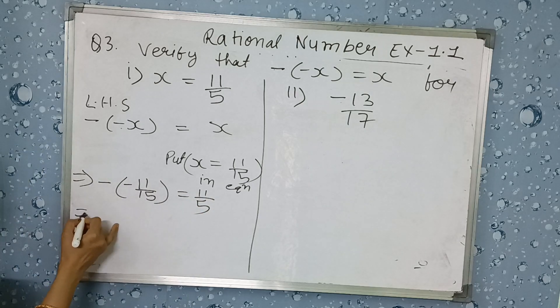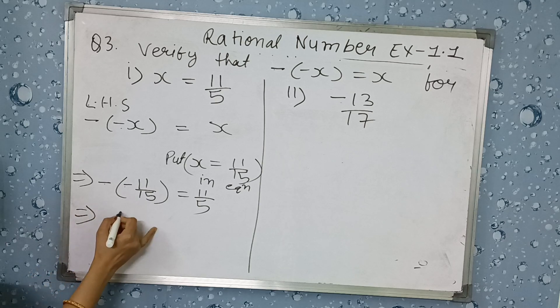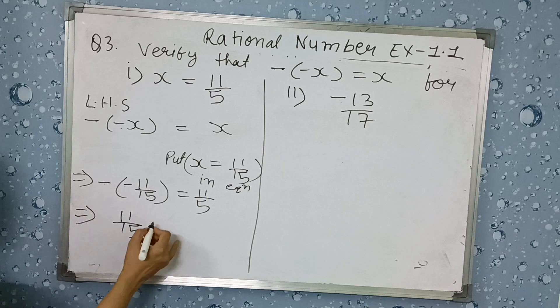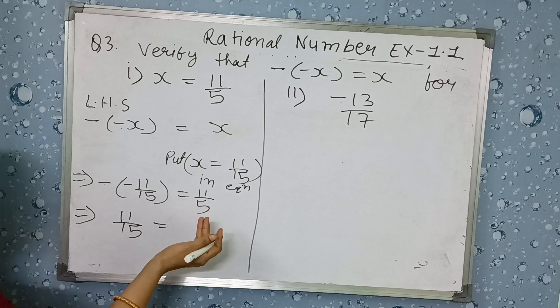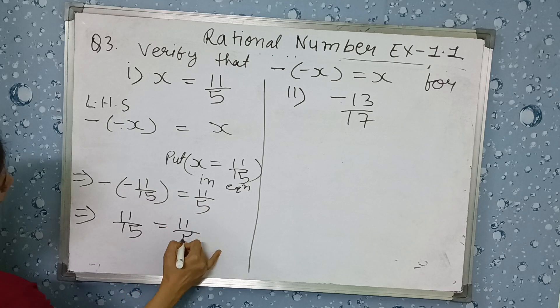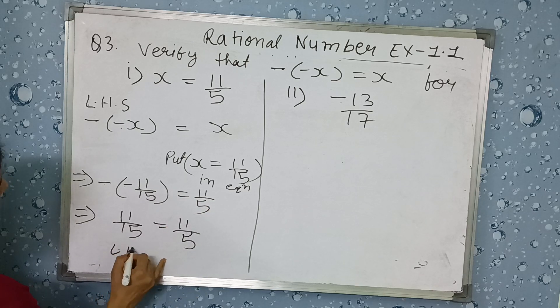It will be minus minus 11 by 15 equals to that side, put it 11 by 15 directly. When minus sign is multiplying with minus, it will be plus. So it is positive and this side it is simple, there is no calculation. So LHS equals to RHS, proved.